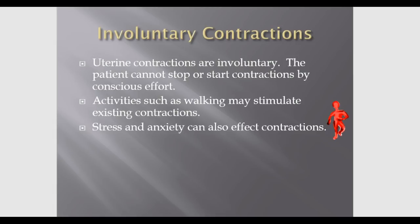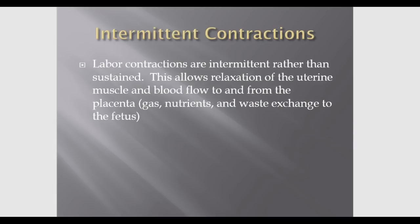Stress and anxiety can influence mom's uterine contractions. It's important that contractions are intermittent — when the uterus contracts during labor it squeezes the blood vessels, placenta, and fetus. The baby needs short interruptions because during the time the uterus is relaxed, blood flow to and from the placenta is restored, allowing gas exchange, nutrient delivery, and waste exchange to occur.